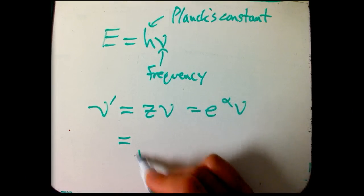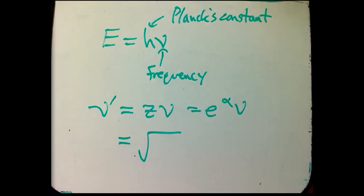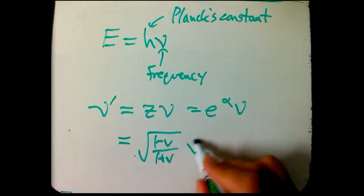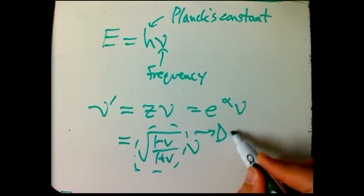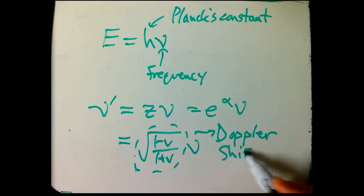A little, in the last video, I had the calculation for that. It's the square root of 1 minus V over 1 plus V times nu. So that's the Doppler shift.